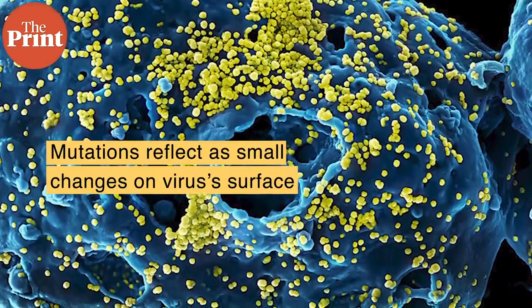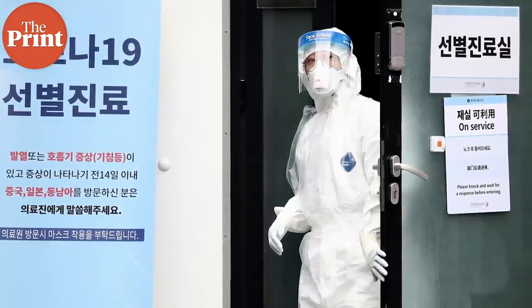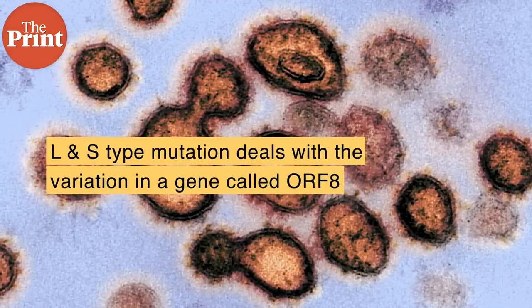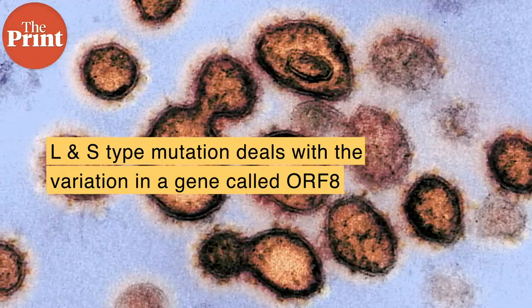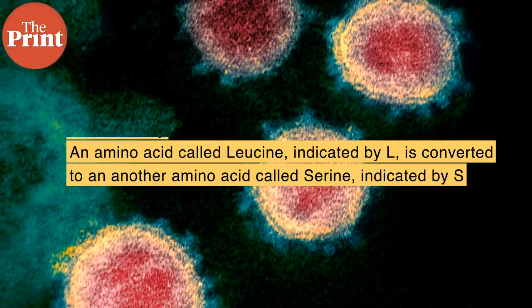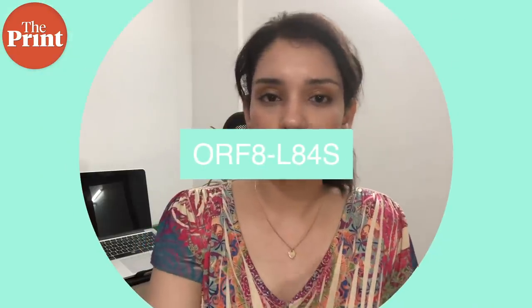Each change is associated with a gene. For example, there were lots of reports earlier about the L-type and S-type mutations — what was in Wuhan and what is circulating in India and so on. Both the L-type and S-type mutations deal with a variation in the gene called ORF8. An amino acid called leucine, indicated by L, is converted to another amino acid called serine, indicated by S. The mutation occurs at the 84th position of the ORF8 gene's protein, so this mutation is called ORF8-L84S.